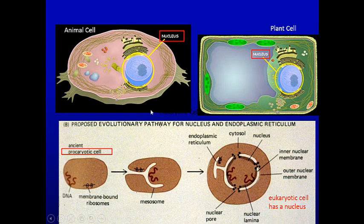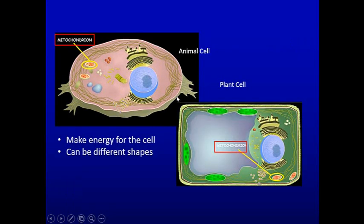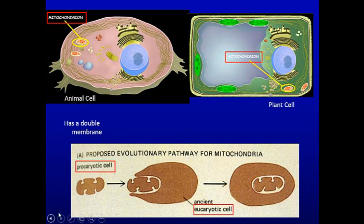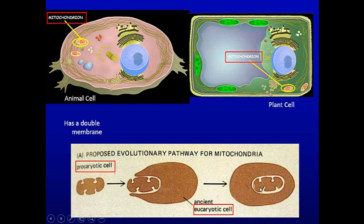A prokaryotic cell is one that doesn't have a nucleus; a eukaryotic cell has a nucleus. The enfolding of the plasma membrane may have facilitated the double nuclear membrane we see in both plants and animals. Mitochondria are present in both plants and animals to make energy — they have different shapes and a double membrane. There's evidence that a prokaryotic cell may have been incorporated into a eukaryotic cell to become the mitochondria, because the mitochondria is the only organelle other than the nucleus that has DNA, and that DNA is circular — characteristic of bacterial DNA.